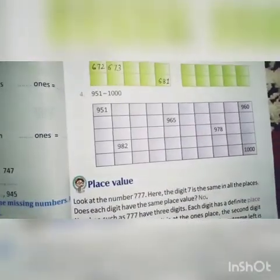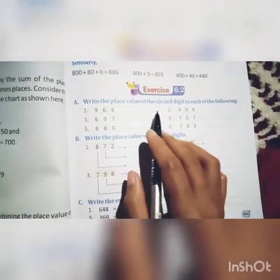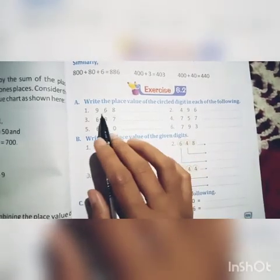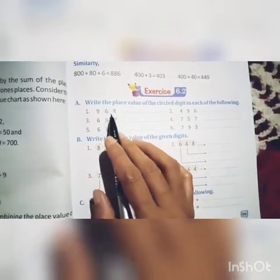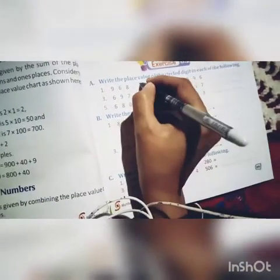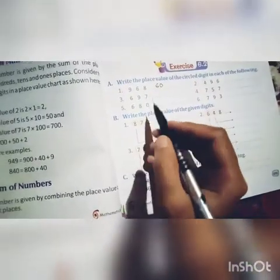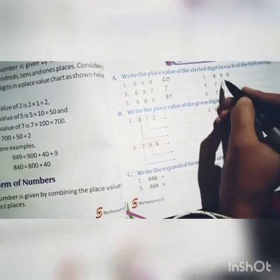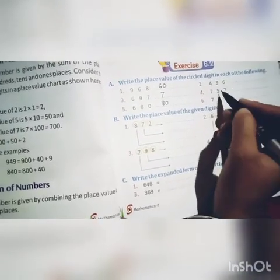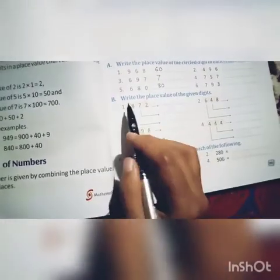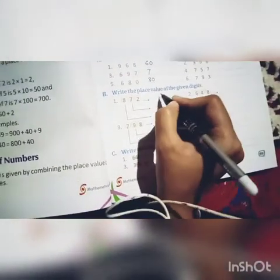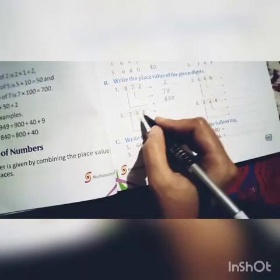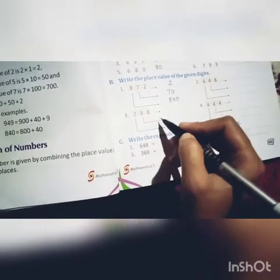Next, come to Exercise 6.2: write the place value of the circled digit in each of the following. You have already learned about place value. The place value of 6 will be 60, the place value of 7 will be 7, and 8 will be 80. The place value of 4 in 453 is also for your homework. Similarly, 2 will be 2, 7 will be 70, and 8 will be 800 — the rest are for your homework.